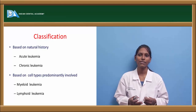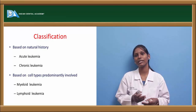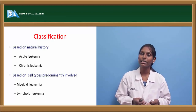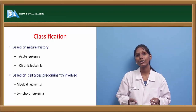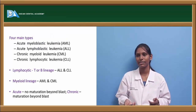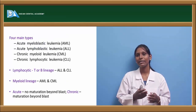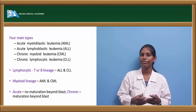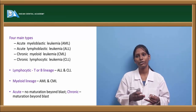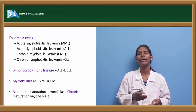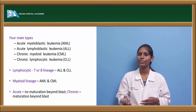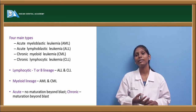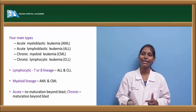Myeloid leukemia involves myelogenous cells such as granulocytes — basophils, eosinophils, and acidophils. Abnormal proliferation of these granulocytes is called myeloid or myelogenous leukemia. Lymphoid leukemia involves lymphocytes, and monocytic leukemia involves monocytes. Based on onset and cell type, there are four types: acute lymphocytic leukemia (ALL), acute myeloblastic leukemia (AML), chronic myeloid leukemia (CML), and chronic lymphocytic leukemia (CLL). Lymphocytic leukemias involve T and B cell lineages, while myeloid lineage produces AML and CML types.